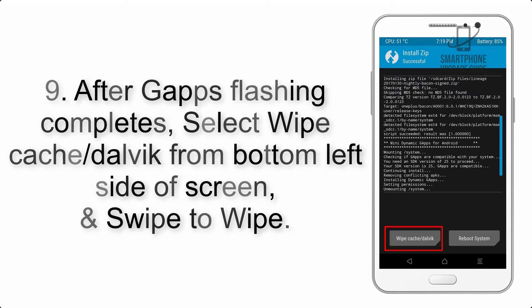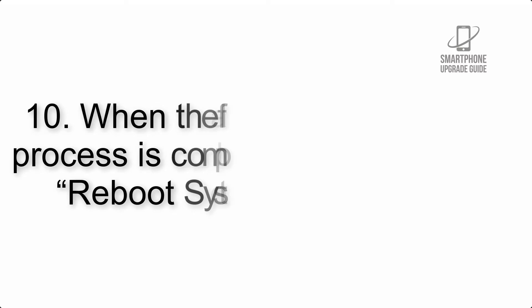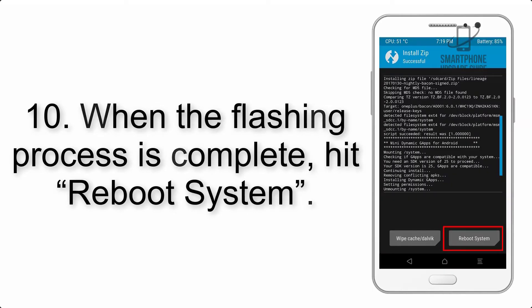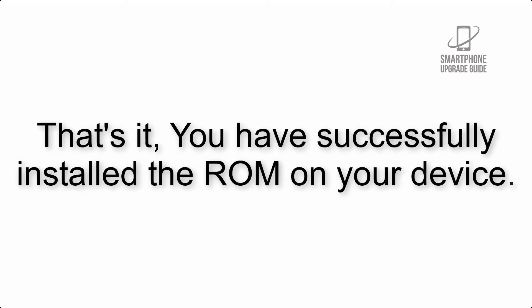Step 8: Flash the GApps zip package in the same manner. Step 9: After GApps flashing completes, select Wipe Cache and Dalvik from the bottom left side of the screen and swipe to wipe. Step 10: When the flashing process is complete, hit Reboot System. That's it — you have successfully installed the ROM on your device.